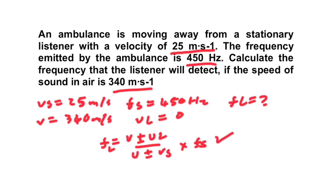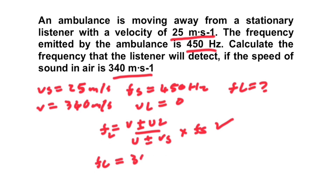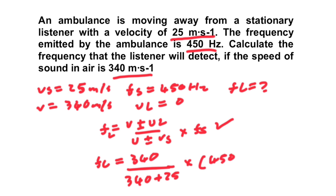Using FL = [(V ± VL) / (V ± VS)] × FS: FL = 340 / (340 + 25) × 450, since the ambulance is moving away and we use plus VS on the denominator. Putting that into the calculator, the frequency observed is 419.18 Hz, which makes sense because the sound source is moving away, so you would expect the observed frequency to be less than that which is emitted.